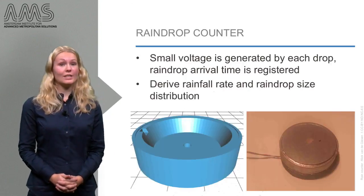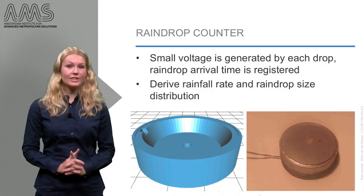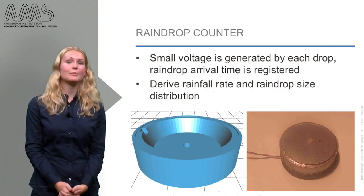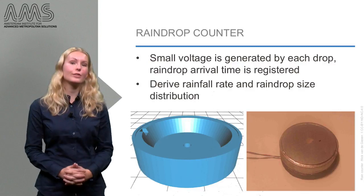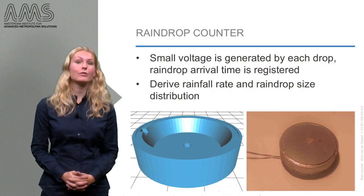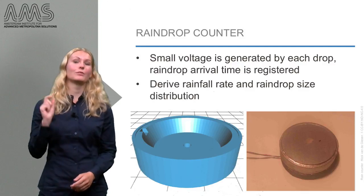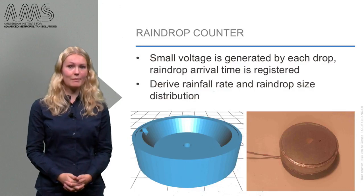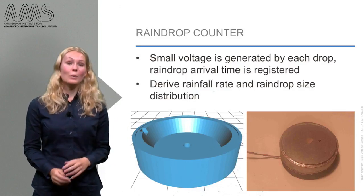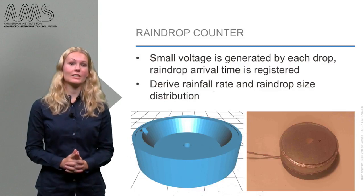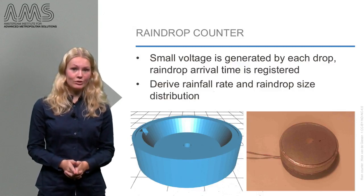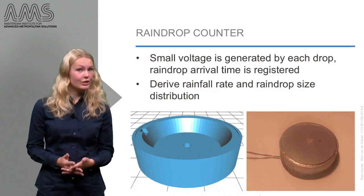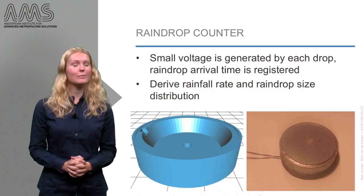Apps are not the only promising source for data. Another option is to encourage citizens to place rainfall sensors in their gardens. This brings us to the raindrop counter, which is being developed by the Technical University of Delft. This device makes use of a piezo sensor, similar to the small sound chips found in birthday cards. The sensor is placed in a small cylinder covered by a membrane, as shown in the pictures. When a raindrop falls on the membrane, a small voltage is generated, which registers the time intervals between droplets arriving at the sensor. Using statistical theories, this can be used to determine the rainfall rate.